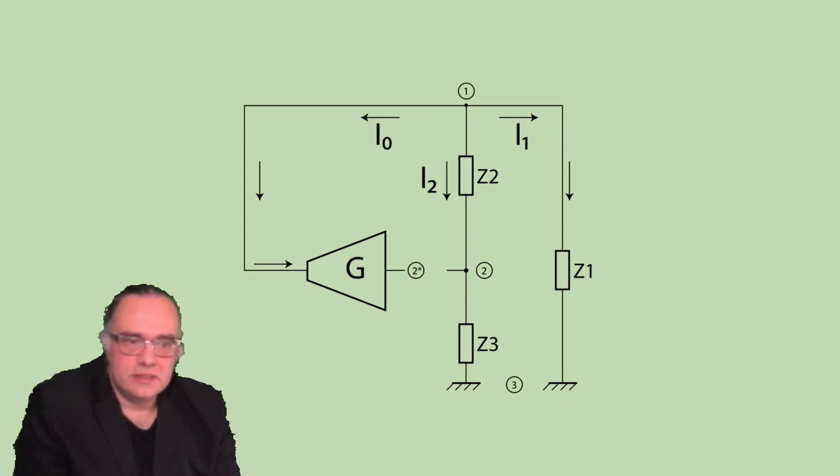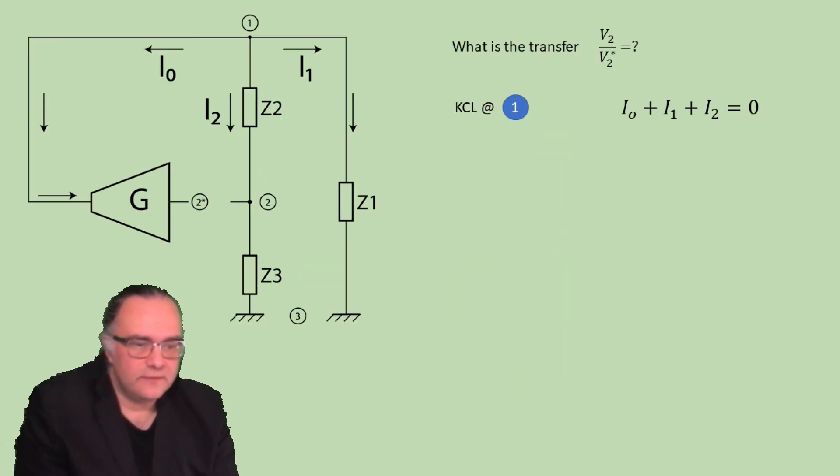It is easily derived and analyzed if you write the Kirchhoff current law for node 1. Node 1 has three branches, three currents: I0, I1 and I2. According to the Kirchhoff current law the sum of the currents should be zero. So now let's express the currents in terms of voltages and components. I0 is simply G times the transconductance V2 star.